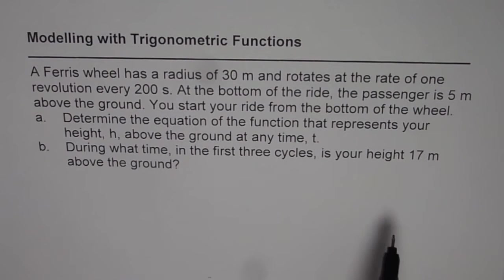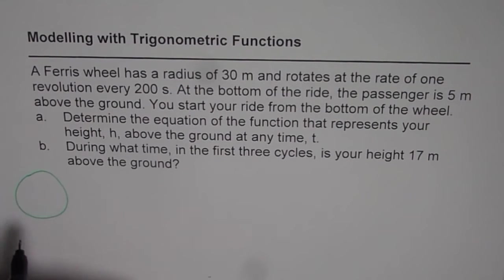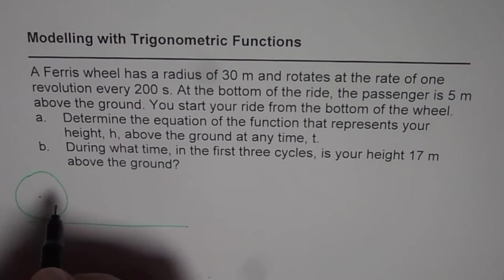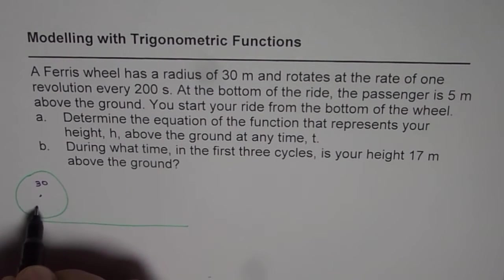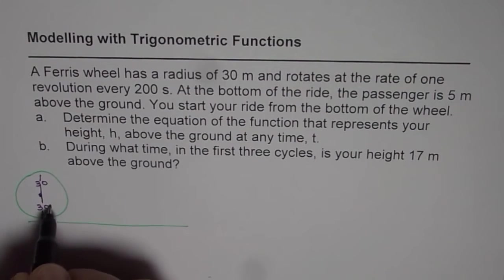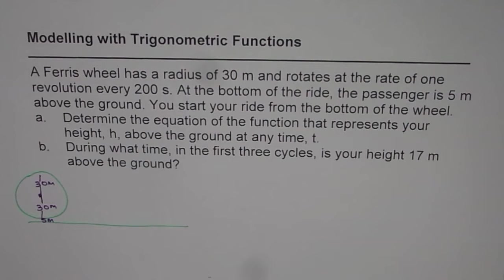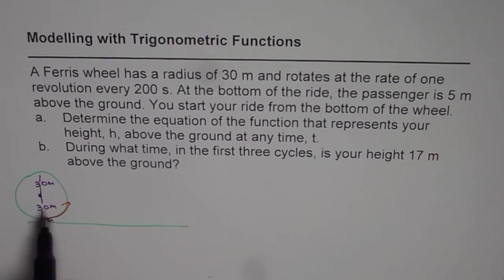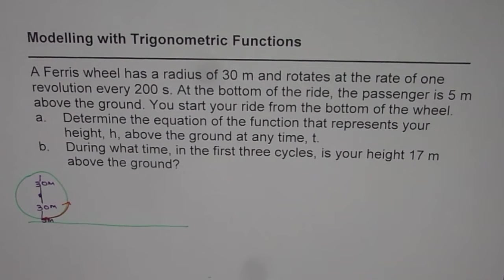So I've changed it to exactly 17 meters above the ground. Basically the situation is that we have a Ferris wheel which is 5 meters above the ground and the radius is 30 meters. So the radius is 30 meters on each side. We have 5 meters at the bottom. The ride starts from the bottom of the wheel, and let us assume that it is moving counterclockwise. As the wheel moves counterclockwise, we can graph the height with respect to time.